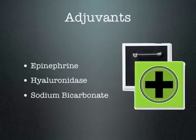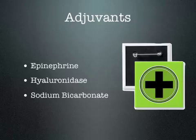The adjuvants we use in local anesthesia include epinephrine, which constricts the blood vessels and prolongs the state of the anesthetic in the tissue by slowing down the clearing of the anesthetic agent from the tissue space. Hyaluronidase, as already described in the context of facial planes, helps break down tissue barriers. Sodium bicarbonate increases the pH.